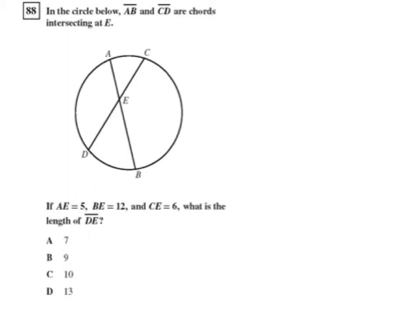Let's label everything here. We have AE as 5, BE as 12, CE as length 6, and we want to find the length of DE. So I'll just label that N.